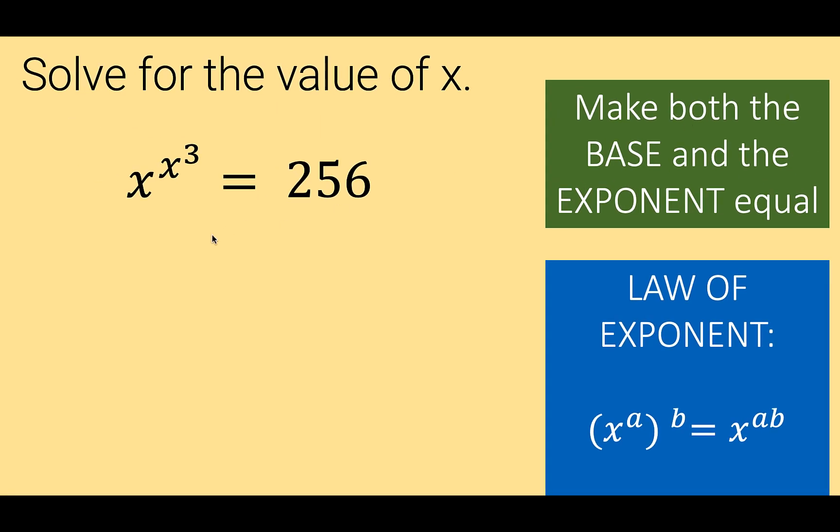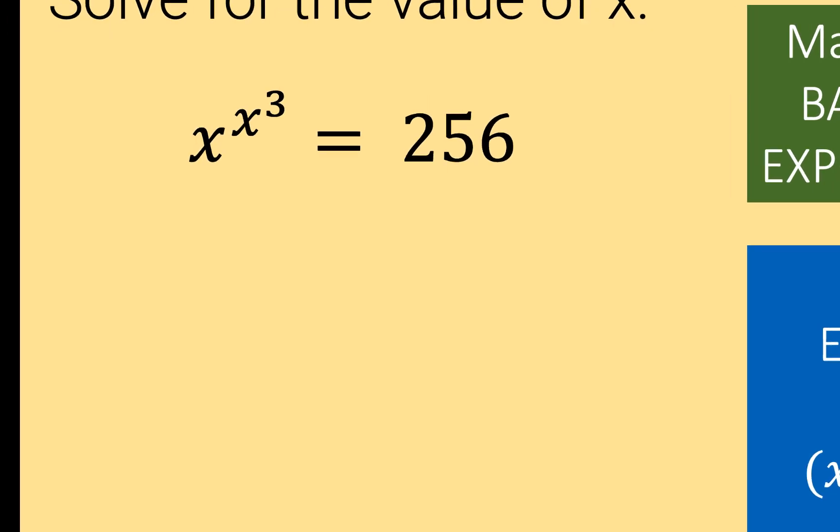So how can we implement the strategy? Remember, we want to make the base and the exponent equal. Since we already have here an exponent 3, then let's raise the left and the right side of this equation to exponent 3. And this is the result.